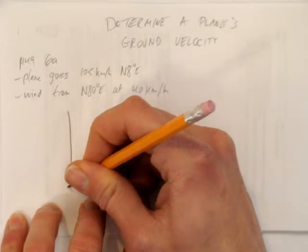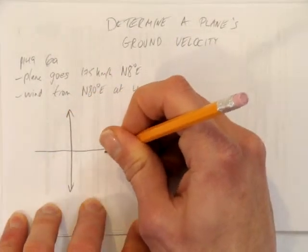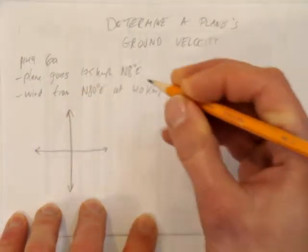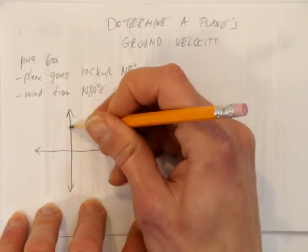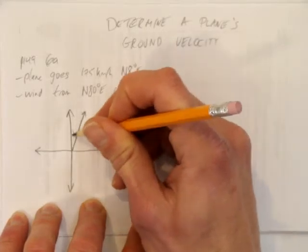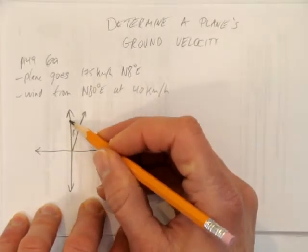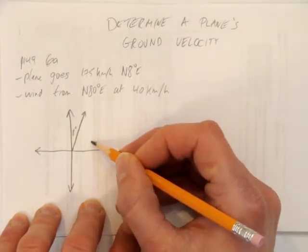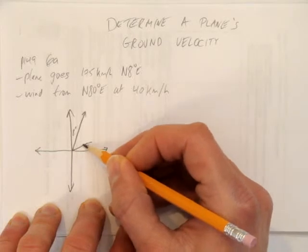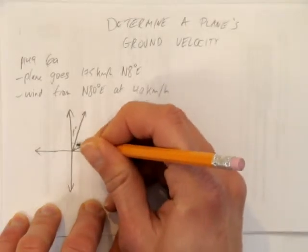Let's begin by drawing a diagram. We'll start with the plane's vector, which is north 8 degrees east, something like this. And then the wind is coming from north 80 degrees east, so it's headed in this direction from north 80 degrees east. So I'll draw it like that. This whole thing in here is 80.